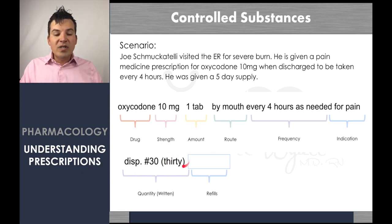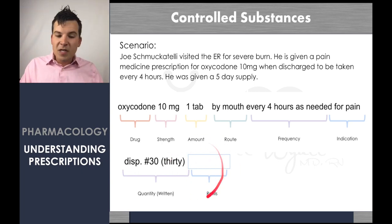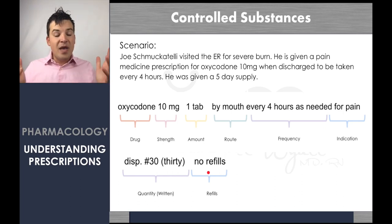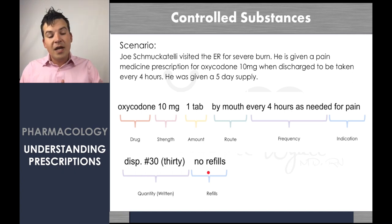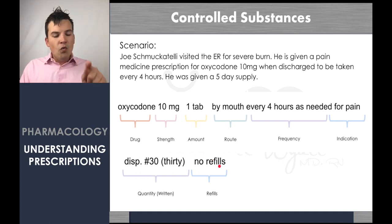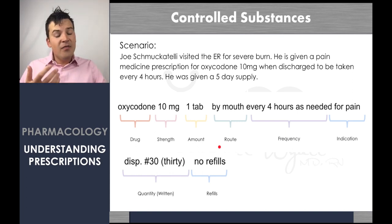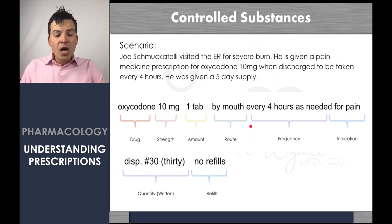How many refills can we give on oxycodone? Zilch — because it's a controlled medication, there are no refills. Most prescription pads have a space for refills by default. If you need to indicate no refills, you write zero with a line through it — that's really important because a plain zero could easily be turned into '10.' A pharmacist would hopefully catch that, as it would be a very common indication that somebody is trying to abuse the prescription.